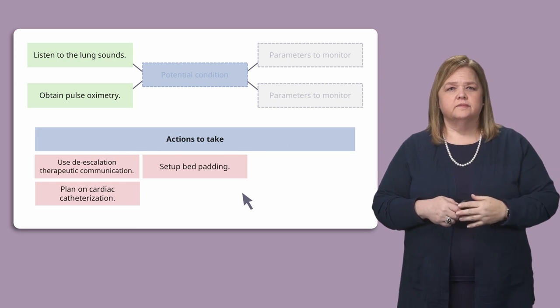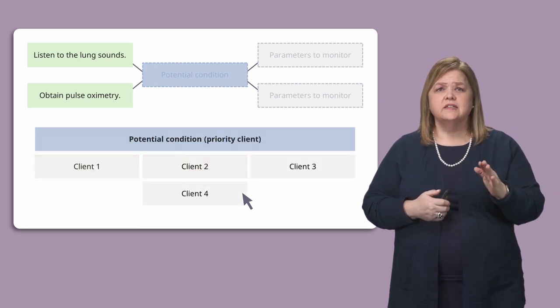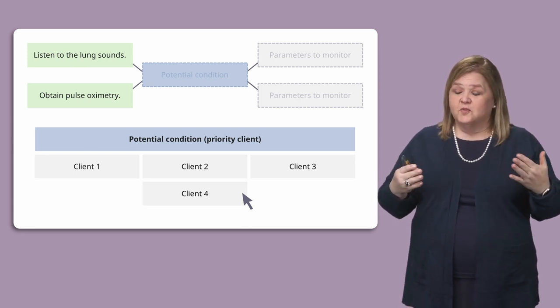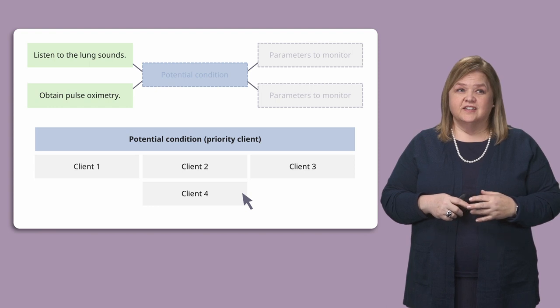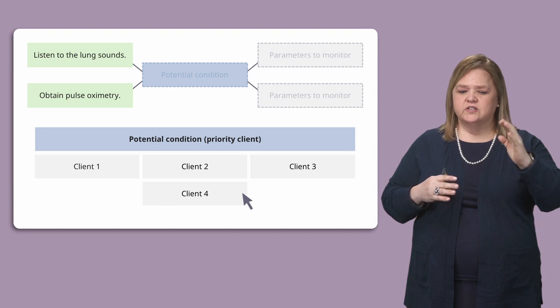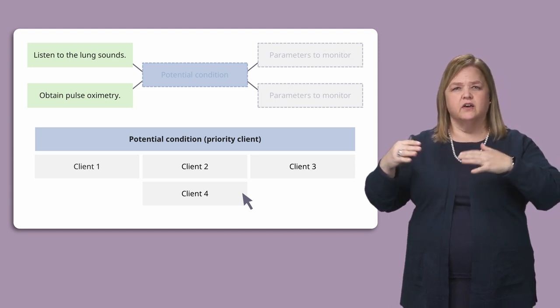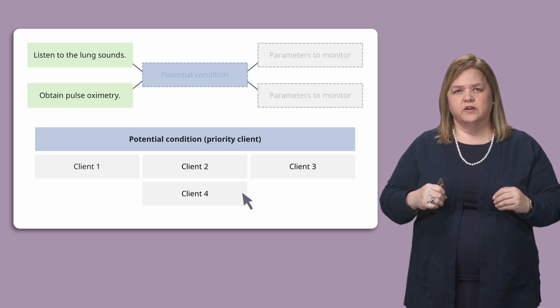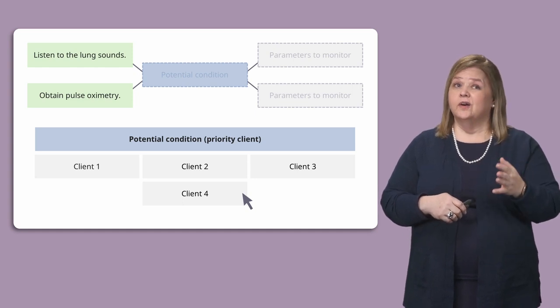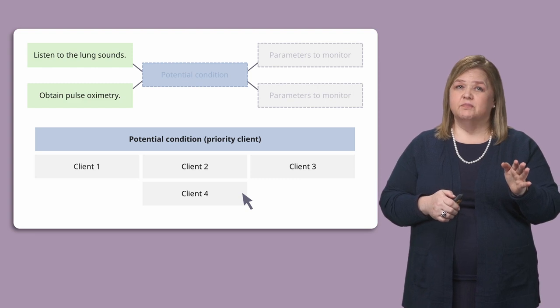Now let's look at potential condition — which really means the priority client. We've already done this work. The middle column asks which client the nurse prioritizes. You walk through the actions to take, see which client they apply to, and determine the priority. The answer is client number three. Now let's confirm why that is.